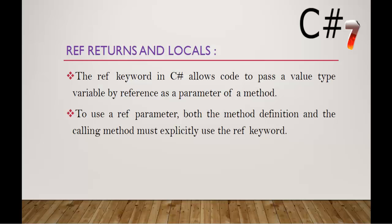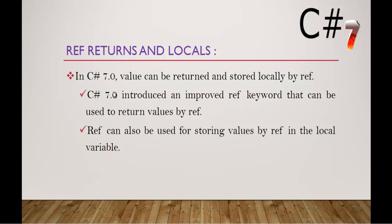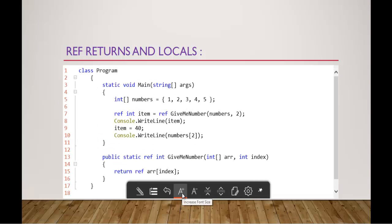Now let us understand what's new in C-Sharp version 7 related to ref. In C-Sharp version 7, a value can be returned and stored locally by the ref keyword. C-Sharp version 7 introduced an improved ref keyword that can be used to return values by reference, and ref can also be used for storing values by ref in a local variable.